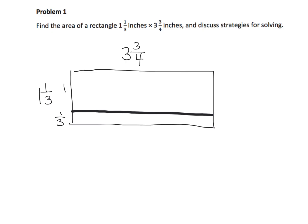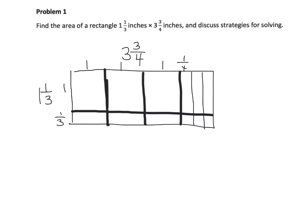For three and three fourths, I'll draw one, two, three, and then draw in the three fourths. So what we have is one here, one here, one here, and then one fourth, one fourth, one fourth. We can look at this now.